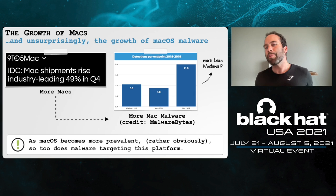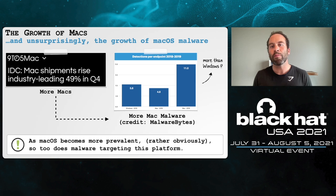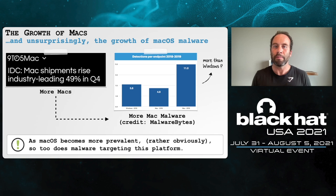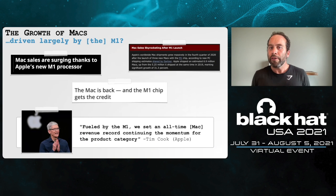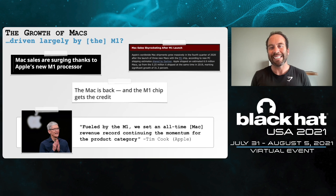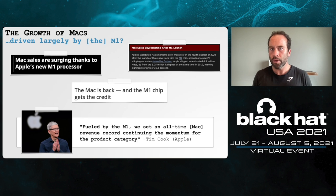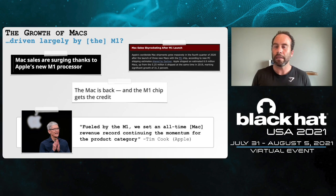macOS and Macs are becoming ever more prevalent and popular. Unfortunately, this means so too is malware targeting this platform — as any technology becomes more popular, malicious code targeting it does as well. One of the main reasons Macs are becoming more popular is Apple's new M1 chip. Even Apple's CEO Tim Cook has noted this as a driving factor behind macOS's almost explosive growth, especially in the enterprise.